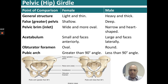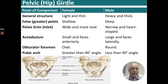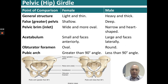In a side-by-side comparison: the female pelvic girdle is lighter and thinner, while the male's is heavier and thicker. The greater or false pelvis is shallow in the female and deep in the male. The pelvic brim in the female is wide and more oval, where the male is narrow and heart-shaped. The acetabulum is small and faces anteriorly in the female, but large and faces laterally in the male. The obturator foramen is mainly oval in the female and round in the male, with the pubic arch greater than 90 degrees in the female and less than 90 degrees in the male.